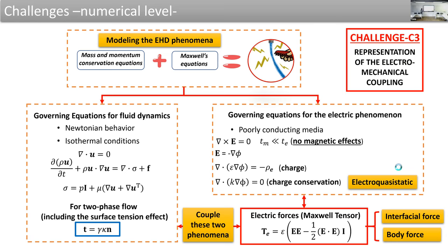For the governing equations for the electric phenomenon, we assume a poorly-conducting medium, meaning the liquids have finite conductivity and finite permittivity. We do not consider the magnetic effect, since the characteristic time of the magnetic effect is much smaller than the electric one. This allows us to express the electric field as the gradient of the electrical potential, and the charge conservation equation can be reduced to the Laplace equation, since the phenomenon is electrostatic.